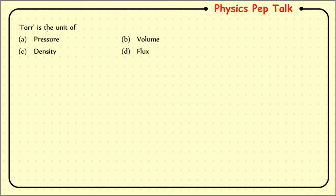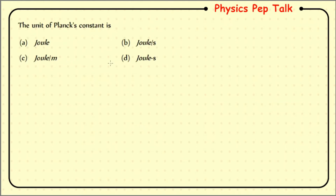Next question: Torr is the unit of pressure, volume, density, or flux? Torr is the unit of pressure. Therefore option A is the correct answer.